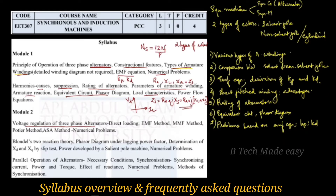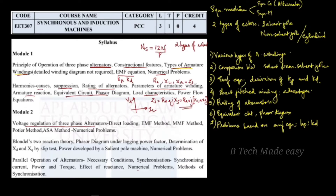What is voltage regulation? We will learn about terminal voltage increase and the percentage of rated terminal voltage. The formula is: no-load terminal voltage minus full-load terminal voltage, divided by full-load terminal voltage. The percentage of voltage regulation is (E0 minus V) divided by V, multiplied by 100.